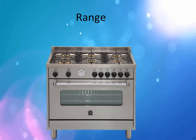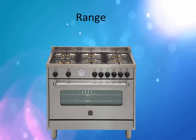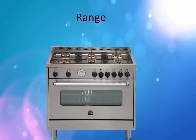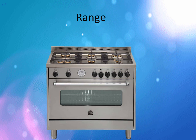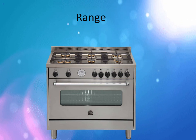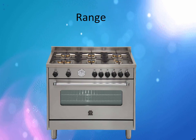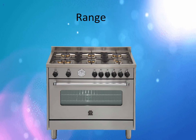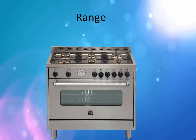Next we have range, or the kitchen stove. A kitchen stove is often called simply a stove or a cooker. It is a kitchen appliance designed for the purpose of cooking food. Kitchen stoves rely on the application of direct heat for the cooking process and may also contain an oven used for baking. Usually when we say range, that is two-in-one — we have the stove on top and at the bottom part is the oven.